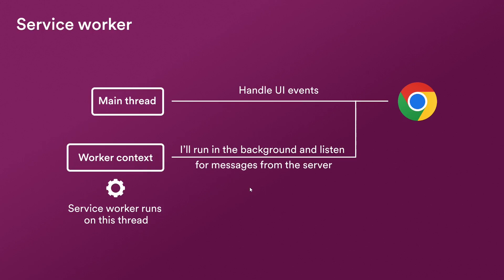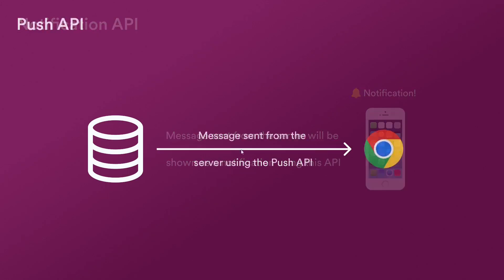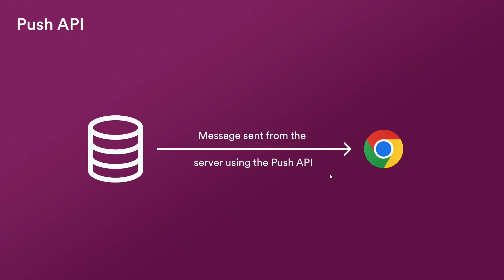The Notification API, as the name suggests, is responsible for creating notifications and displaying them to the client. The Push API gives web applications the ability to receive messages pushed to them from a server. Now the basic flow is going to look something like this.